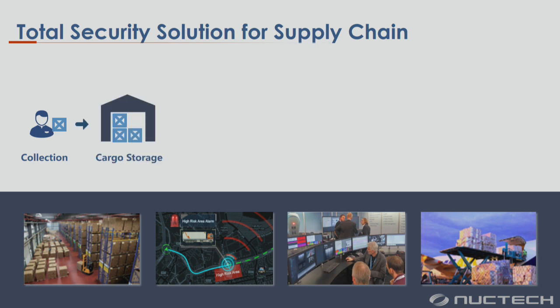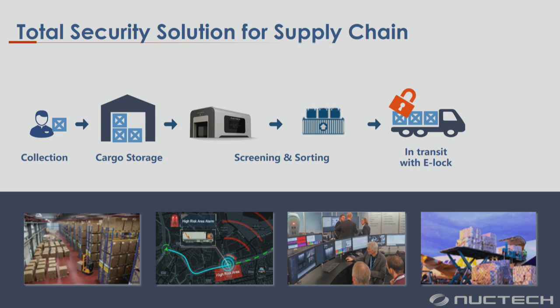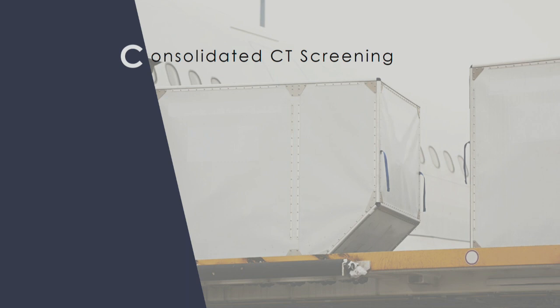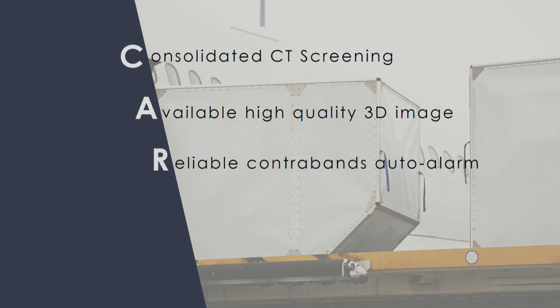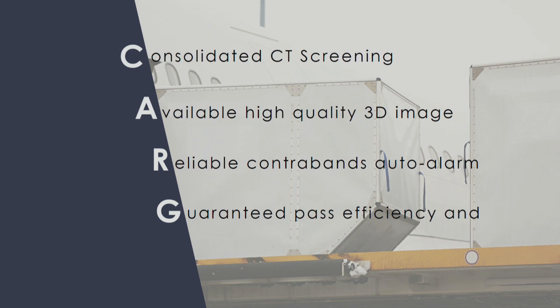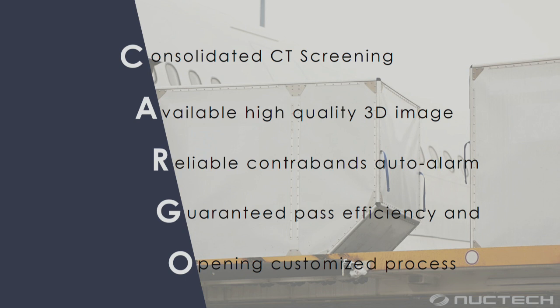For the total supply chain solution, the steps will be: first, collection; next, cargo storage; next, screening and sorting by our C-Titan machine; next, in transit with the e-lock; and finally, cargo departure. So finally — CARGO: C for Consolidated CT screening, A for Available high-quality 3D image, R for Reliable contraband auto alarm, G for Guaranteed pass efficiency, and O for Opening customized process. CARGO here.